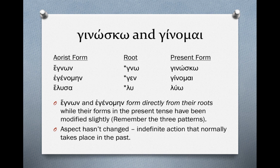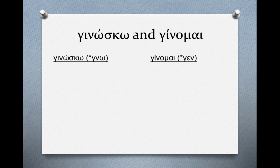These second aorists — their aspect hasn't changed at all. When we studied first aorist, we said an aorist relates indefinite action that normally takes place in the past, and in English we generally provide the suffix -ed to denote the correct aspect. Second aorists, even though they form a little differently, their aspect is not different. It's the same: indefinite action that normally takes place in the past. So let's analyze these two verbs again, ginosko and ginomai, according to their translations and their forms.